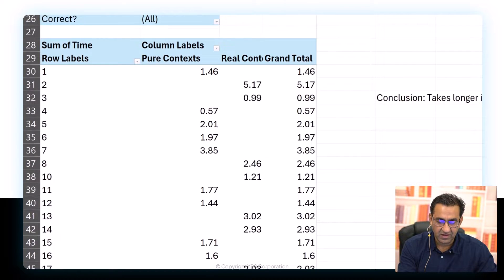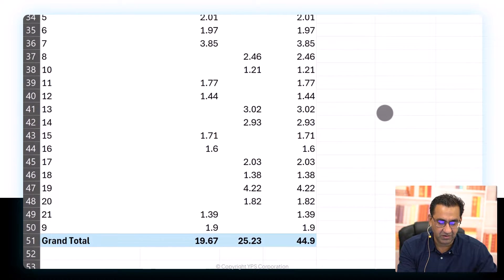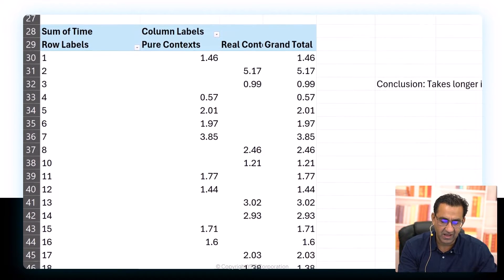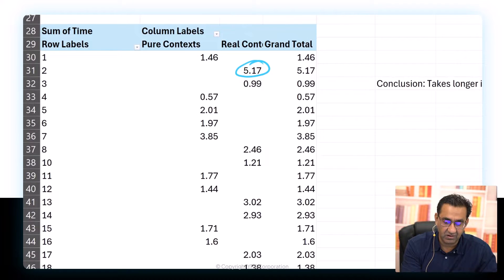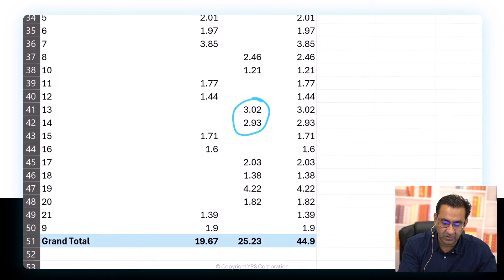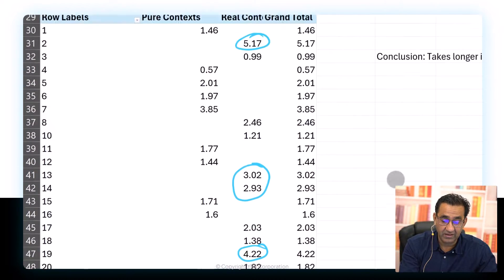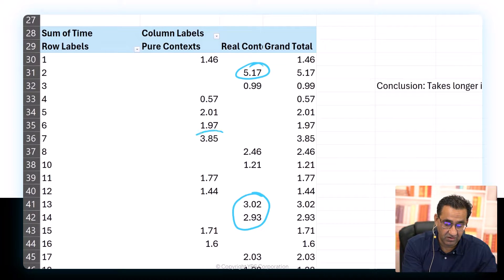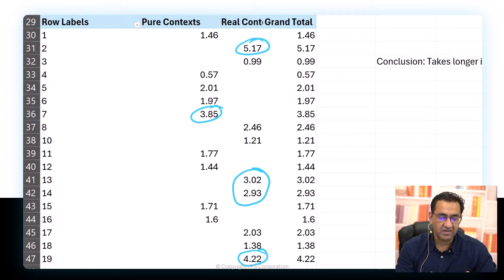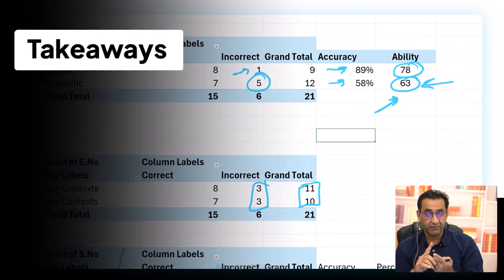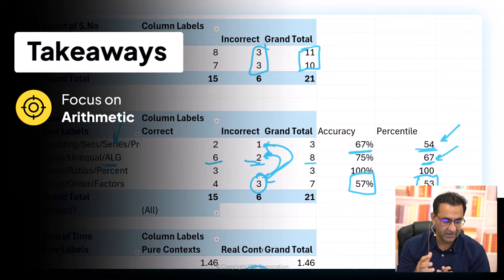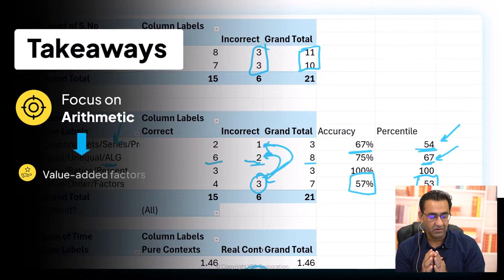Looking at timing by real context and pure context, questions where the student takes longer are mostly in real context — those are visible here. In pure context, longer questions are far and few. So the key takeaway is: focus on arithmetic, and more specifically, on value, order, and factors within arithmetic.